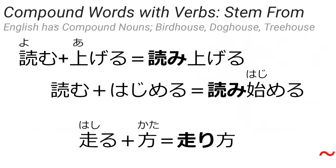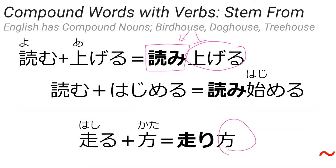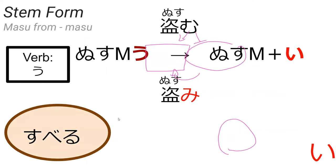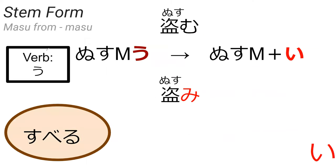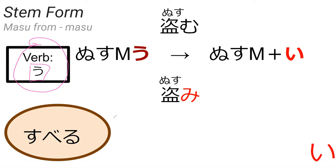Last time I touched on compound verbs, or compound words. Most compound words in Japanese are made with the stem form of a verb attached to something else — that something else could be a verb or a noun. Stem form is basically masu-form minus masu. For u-verbs specifically, for example nusumu — do you know what nusumu meant?